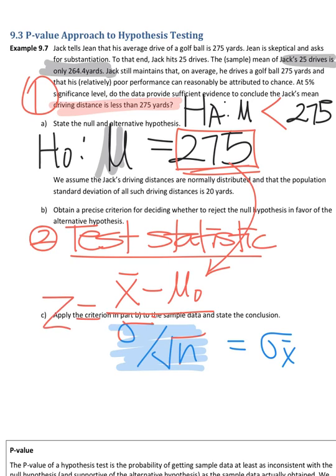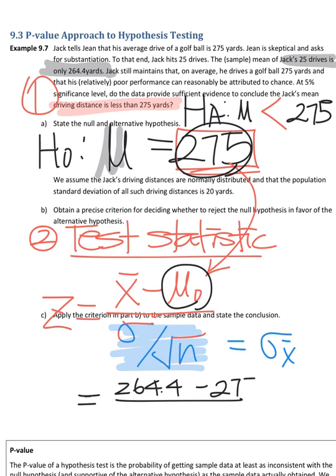So now, let me plug. Let me plug the values. Sample mean was 264.4. And μ₀ was 275, the population mean. And now, we need the population standard deviation. Where it is? It was given as 20.